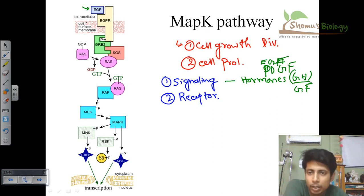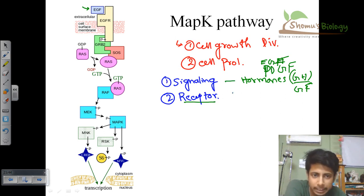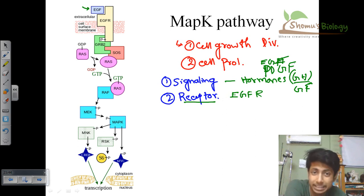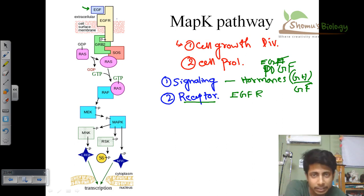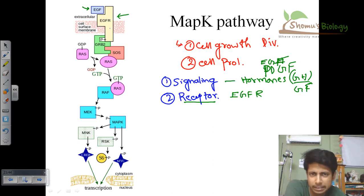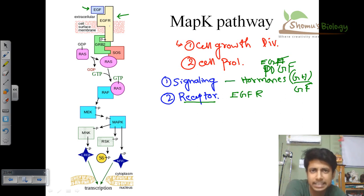There must be a receptor for each signaling molecule, and the naming is straightforward — you take the name of the signaling molecule and add 'R' as a suffix. So EGFR is the receptor for EGF. EGF is the signaling molecule and EGFR is the receptor embedded in the cell membrane. This EGFR receptor is a transmembrane protein, and once EGF contacts EGFR, it gets phosphorylated — it is an enzymatic receptor.